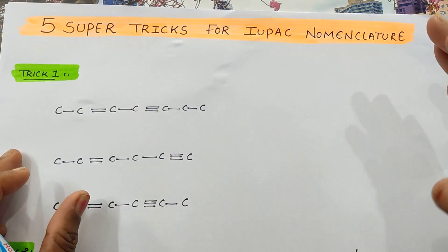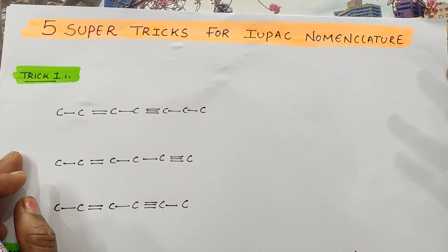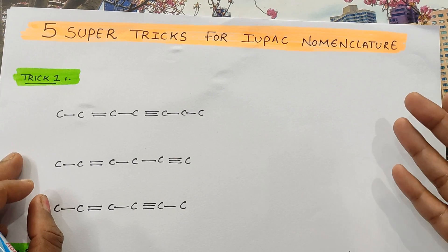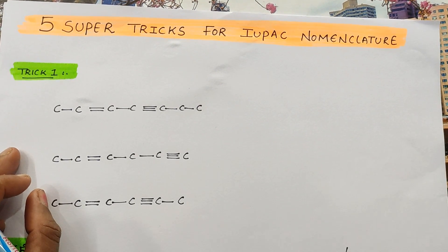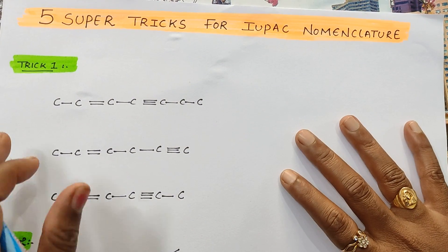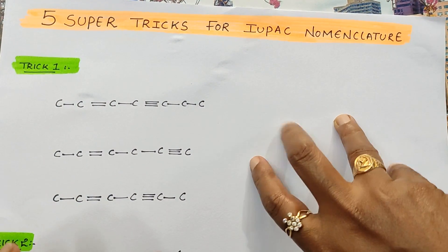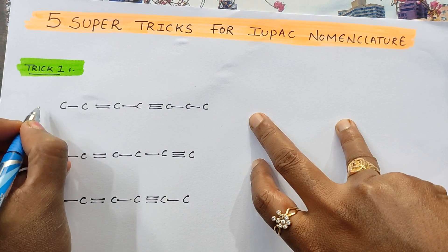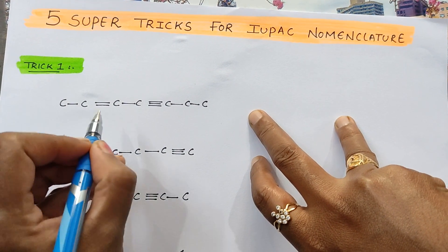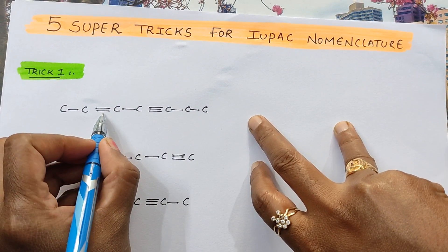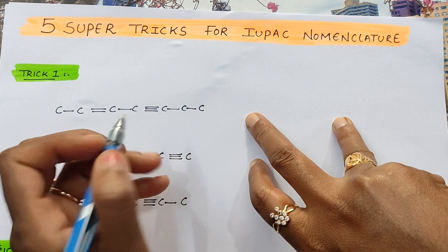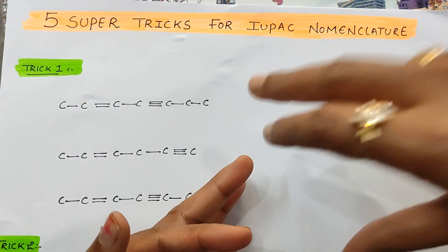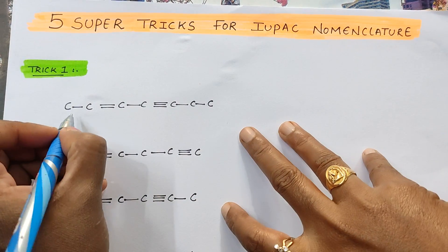Trick number 1 is related to unsaturation. When there is a double bond and a triple bond, how you have to give numbering? This trick gives you the clarity. For example, see the first structure. In this structure, it is having a double bond as well as a triple bond. So, from which direction you give the numbering?